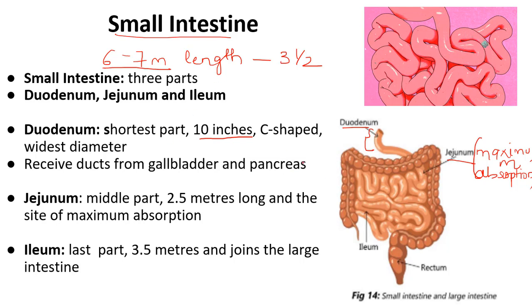Absorption does not take place in the stomach, esophagus, or mouth — only digestion takes place there. Blood cannot absorb from those parts of the digestive system. It can only absorb from the small intestine, that is basically the jejunum part. Ileum is the last part, approximately 3.5 meters in length, and it joins and connects to the large intestine.